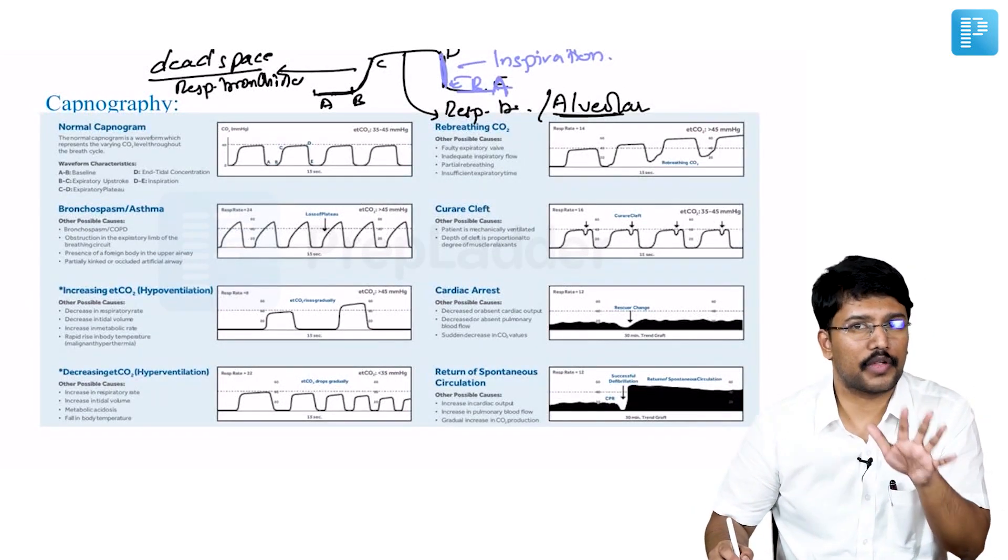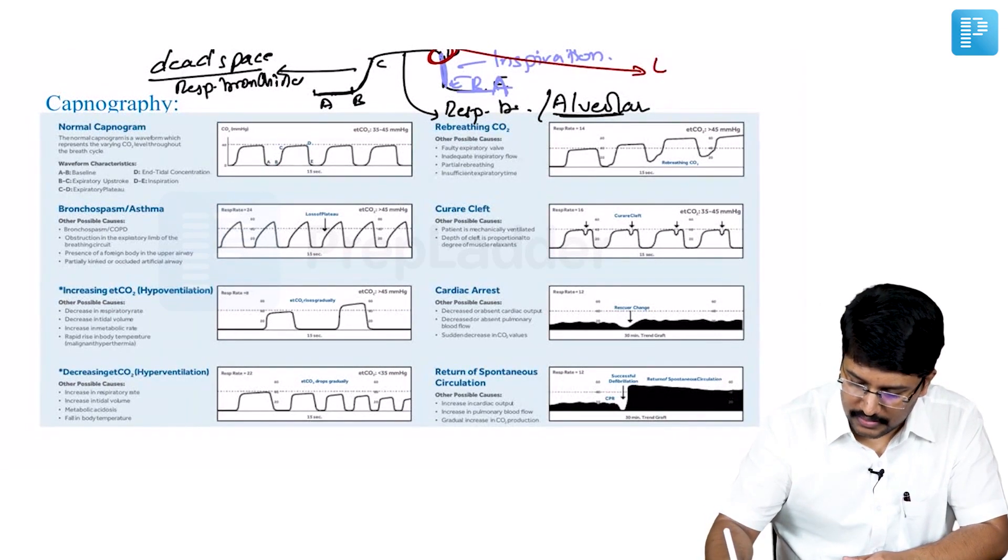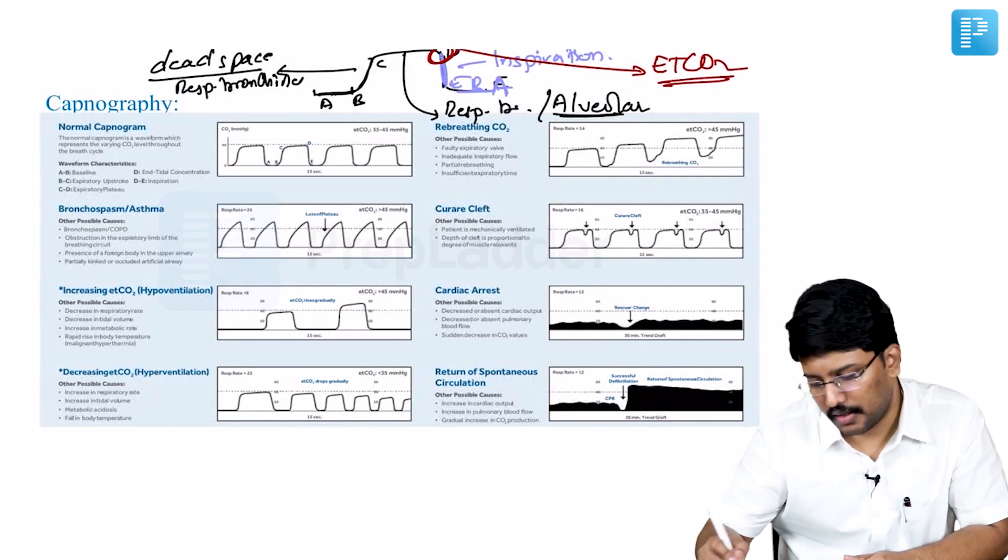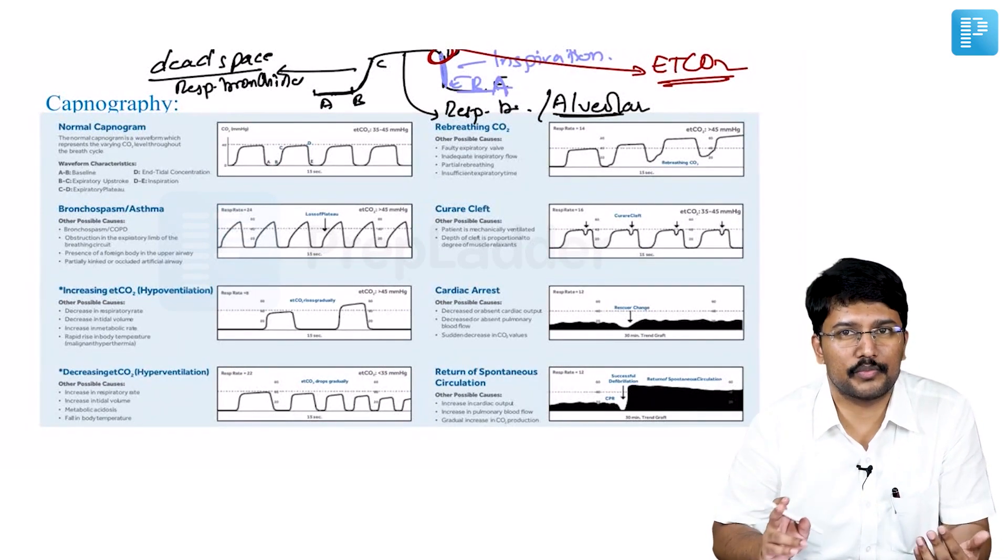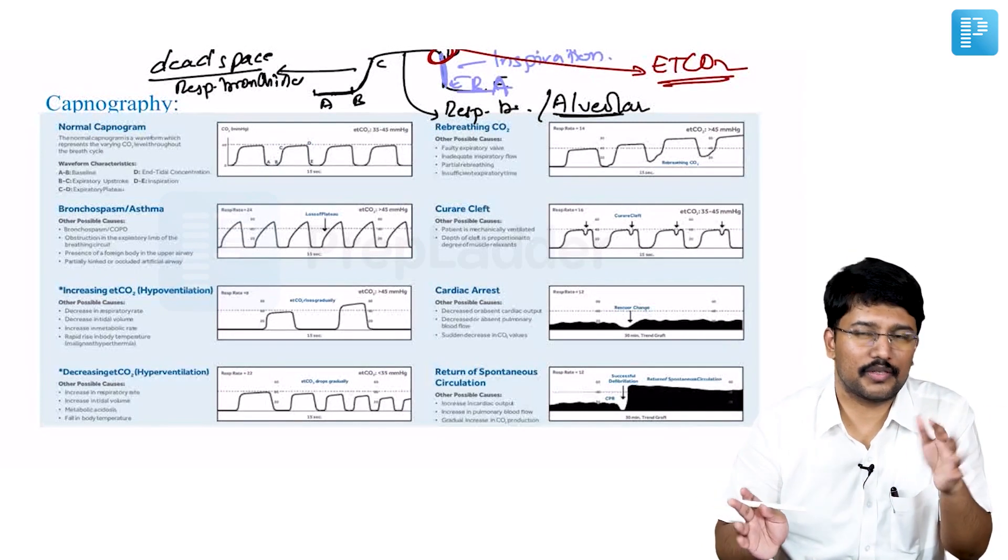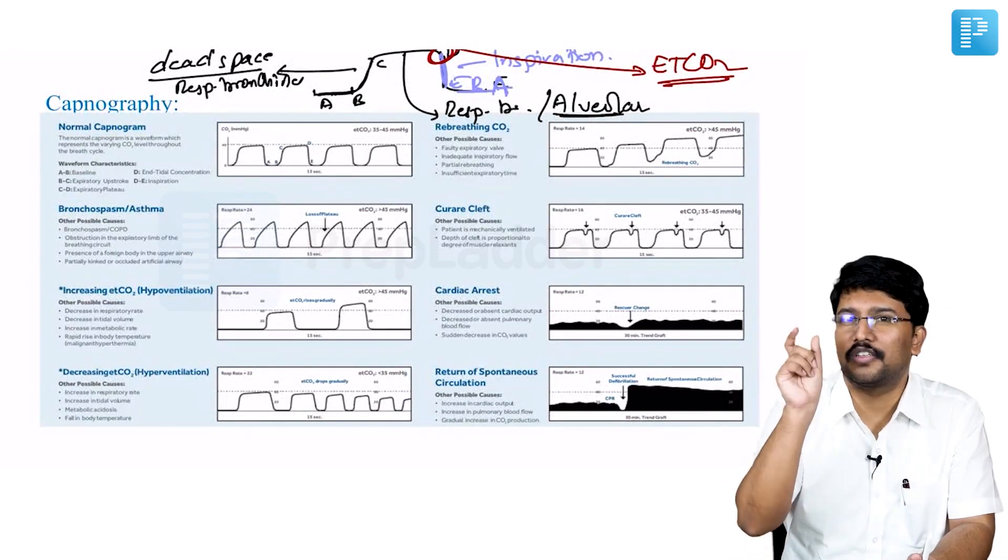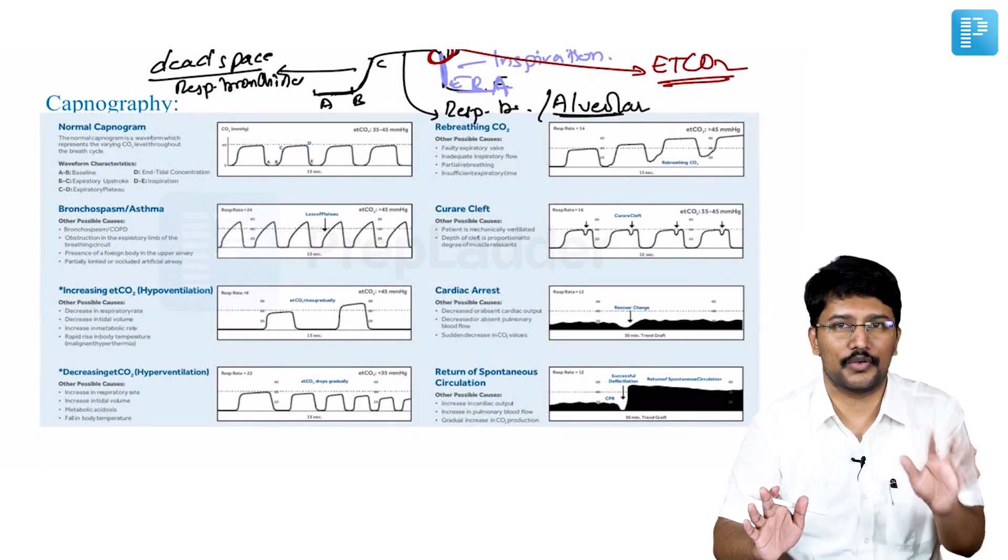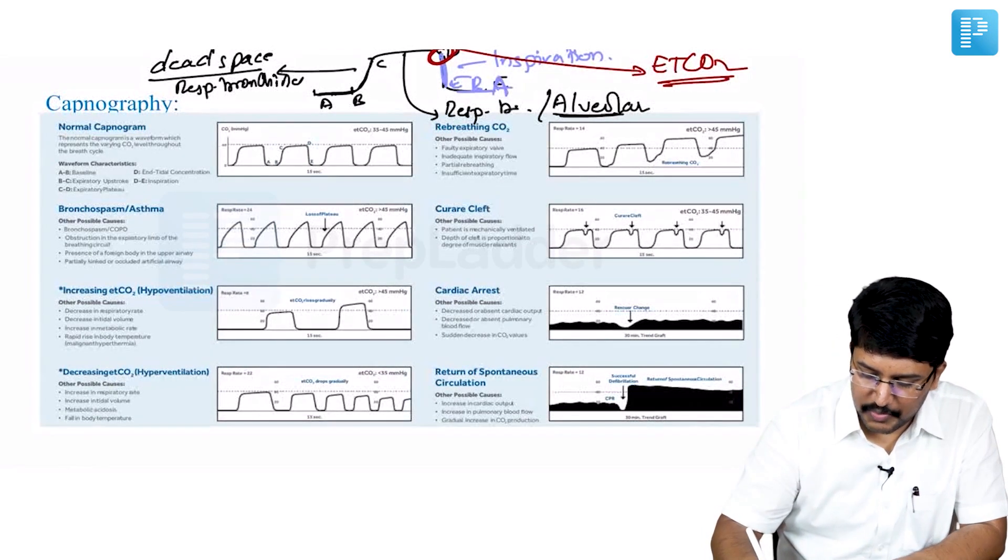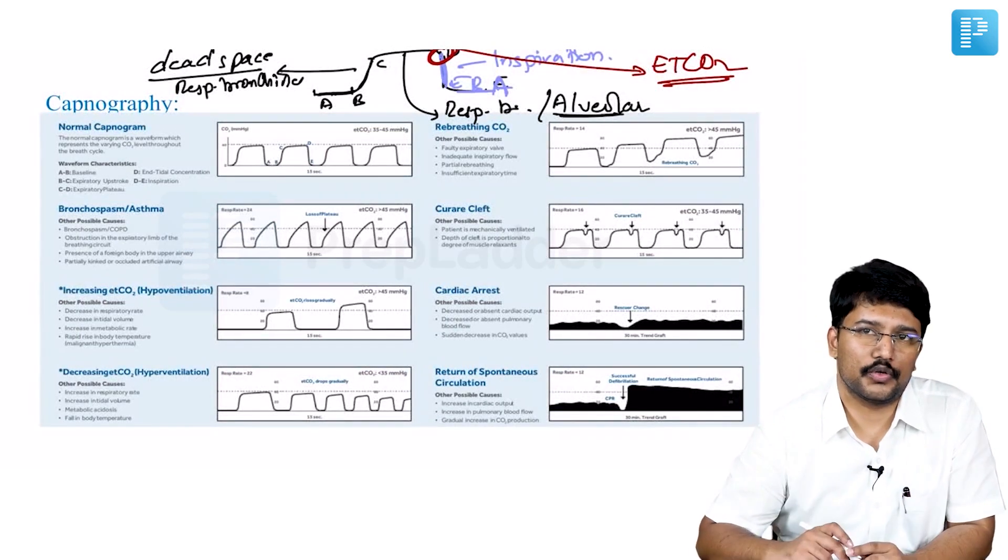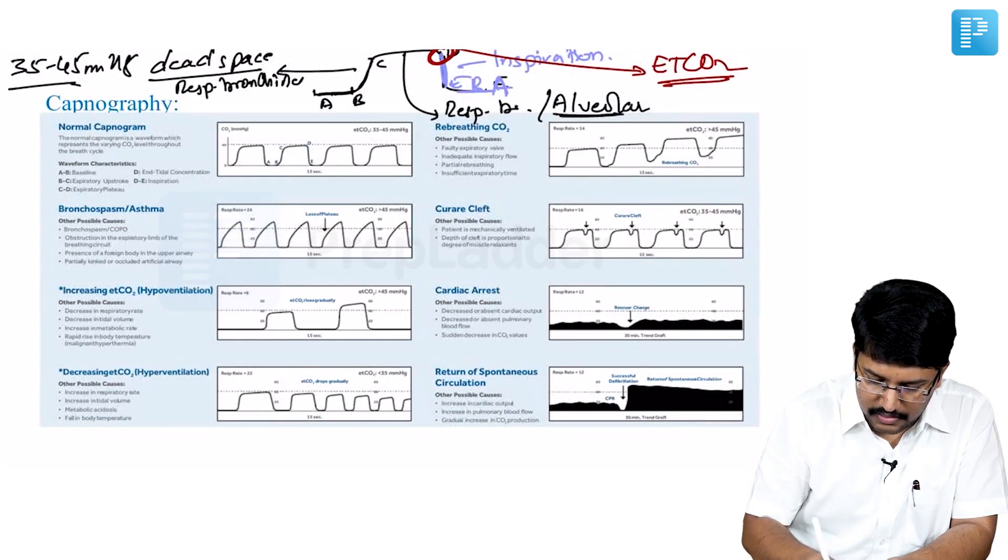So the most important part of this waveform capnography, especially in the ICU setting is this portion D. This is what we call as ETCO2. What do I mean by ETCO2? It means end tidal carbon dioxide. See for many years when I was an undergraduate and postgraduate student, I was believing ETCO2 means endotracheal tube carbon dioxide because the only setting where we were using ETCO2 monitoring was when the patient was on ventilator and there was a small sensor hooked to the endotracheal tube. So I was always assuming that ETCO2 means endotracheal tube carbon dioxide, but it's basically end tidal carbon dioxide. So this is where our tidal expiration is ending and we are taking a CO2 reading. What is a normal ETCO2 range? 35 to 45 millimeters of mercury.